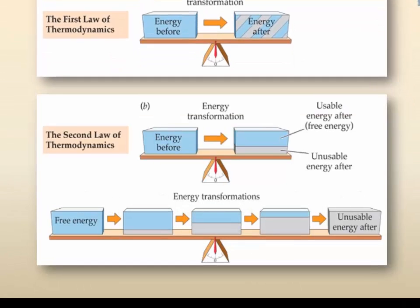The second law of thermodynamics states that the quantity of energy available to do work, which is known as the free energy, decreases, while unusable energy, which is known as entropy, increases over time.